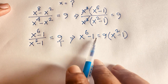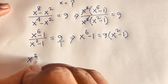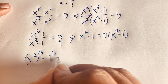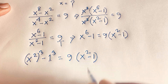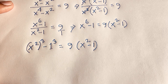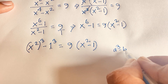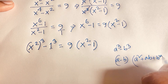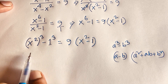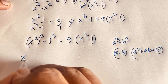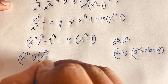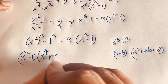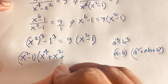Now x⁶ - 1 can be written as (x²)³ - 1³. We know the difference of cubes formula: a³ - b³ = (a - b)(a² + ab + b²). Applying this, (x²)³ - 1³ = (x² - 1)(x⁴ + x² + 1). So we have (x² - 1)(x⁴ + x² + 1) = 9(x² - 1).